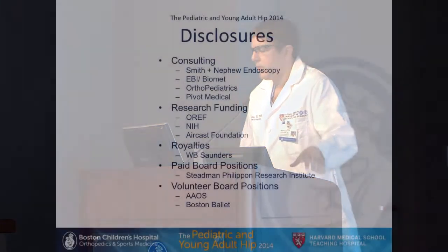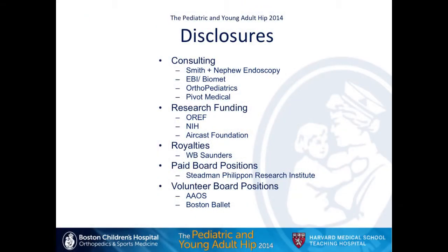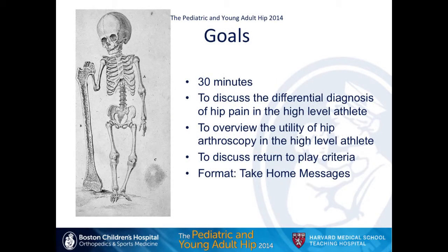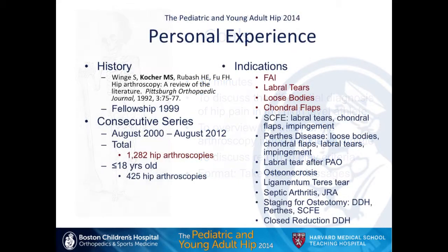My disclosures are shown here; I don't think there are any specific conflicts with this talk. My goals are to discuss a differential diagnosis of hip pain in the high-level athlete, overview the utility of hip arthroscopy, and discuss return-to-play criteria. My personal interest in hip arthroscopy has been long-standing — we wrote an article in 1992, I learned hip arthroscopy in fellowship in 1999, came on staff in 2000, and have done over a thousand hip arthroscopies. The most common indications are FAI, labral tears, loose bodies, and chondral flaps.